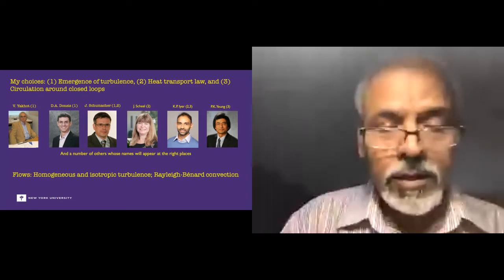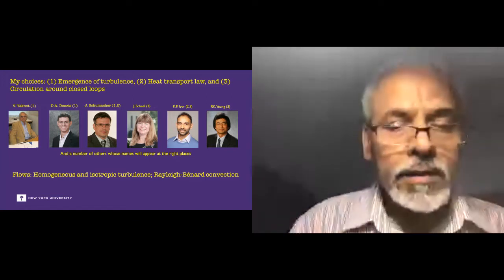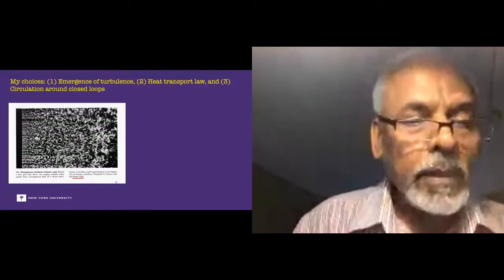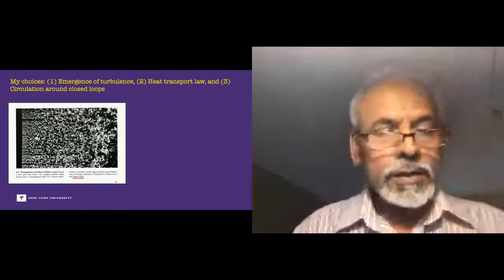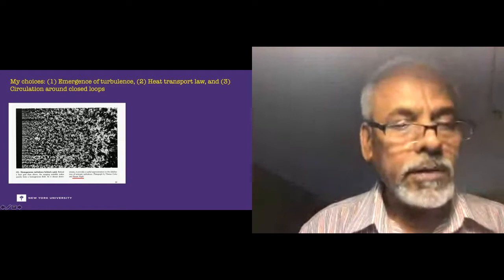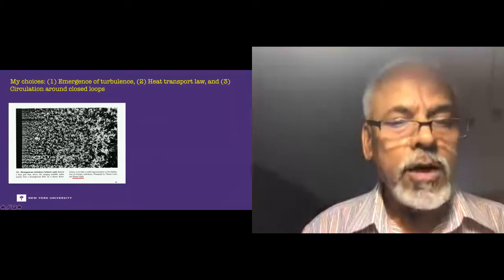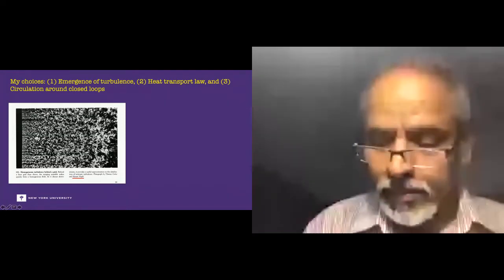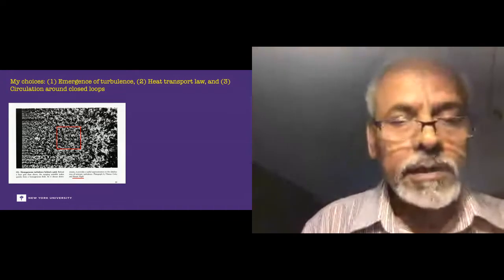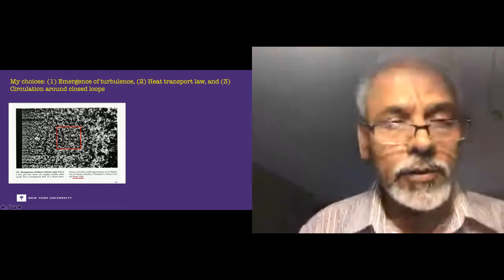And the two flows in which I will look at these three topics are homogeneous and isotropic turbulence, and Rayleigh-Bernard convection. One laboratory realization of homogeneous isotropic turbulence is this. It's a picture taken in Professor Hassan Nagib's lab many years ago. What you have is a grid of bars to the left of the screen put against a flowing stream of air. And then each bar produces a wake, which becomes turbulent. And these merge together to form what is regarded as homogeneous and isotropic turbulence.